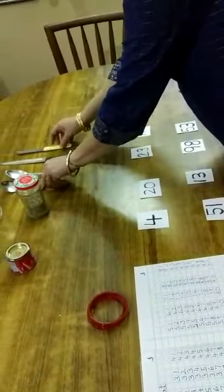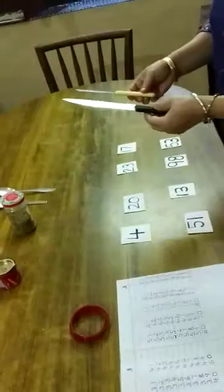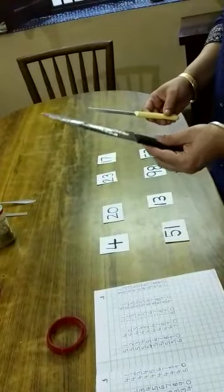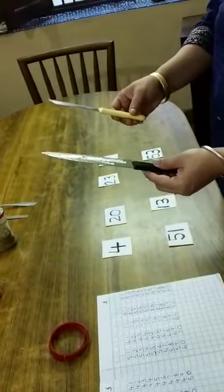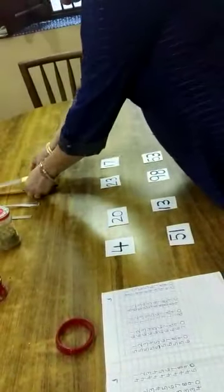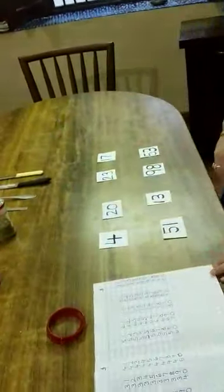When mummy has to chop vegetables, she uses different knives. This is a big knife and this is a small knife. So these were all the objects we were talking about.